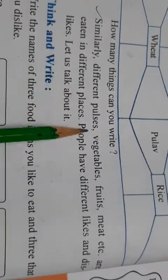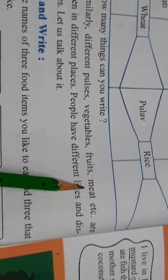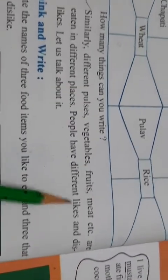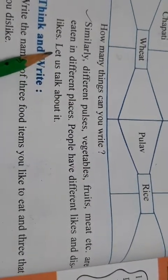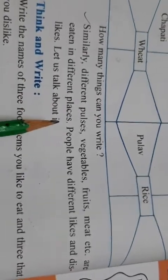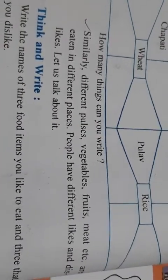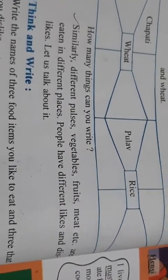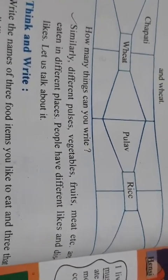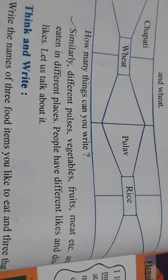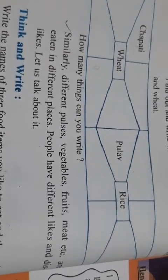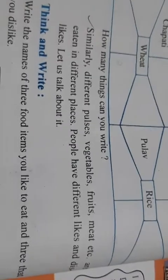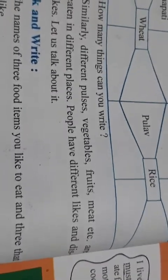Similarly, different pulses, vegetables, fruits, meat, etc. are eaten in different places, and people have different likes and dislikes. Let us talk about it. Har ek jagah pe alag-alag dal ukti hai, sabziyaan, fruit wagera — alag-alag jagah pe alag-alag milta hai. To jahan jo milta hai, jahan jisko jo pasand hai, kisi ko kuch hi pasand hai, kisi ko nahi — usi sab se sabka khana-peena hota hai.